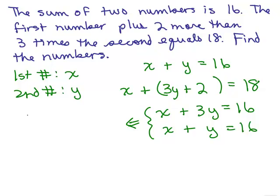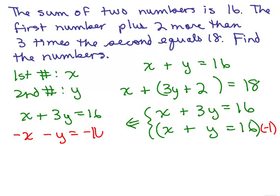I'm going to show it over here. The first equation is the same and I'm going to take the second equation and multiply both sides, every term on both sides, by negative 1. So that gives me a negative x, a minus y, and a minus 16. And if I add up, I get 2y is 0.